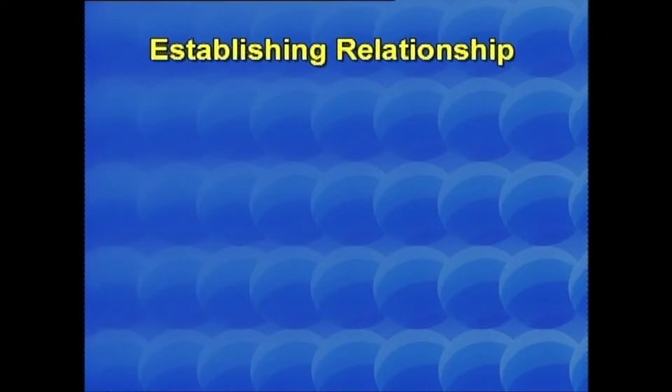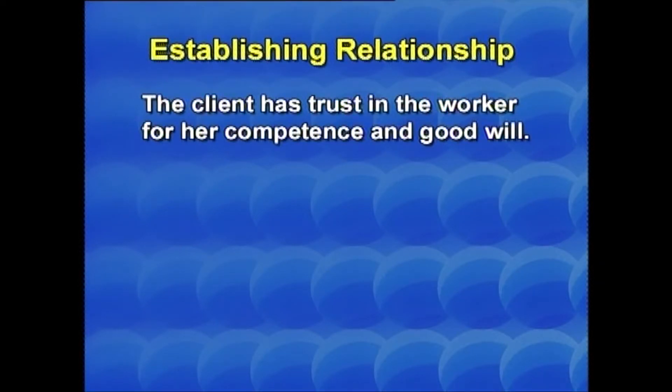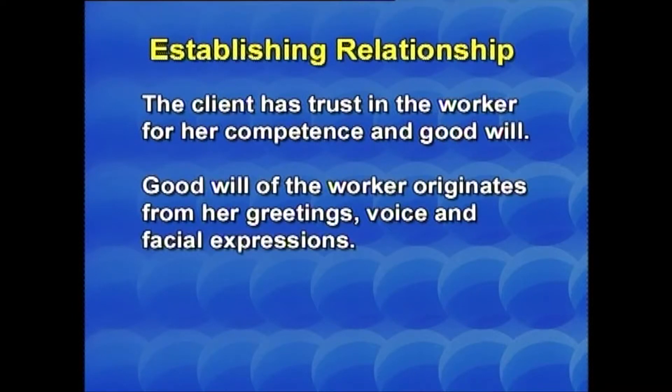Establishing relationship with the client: the client has trust in the worker for her competence and goodwill. Goodwill of the worker originates from her greetings, voice, and facial expressions. Because of fixed ideas about workers developed through friends and relatives, fears and complexes dominate the client. Factors of class or caste intensify these feelings, and specific transference reactions are activated by dependence. Awareness of the worker slowly replaces these with trust as the worker demonstrates respect for the client's rights and desire to enhance self-direction.